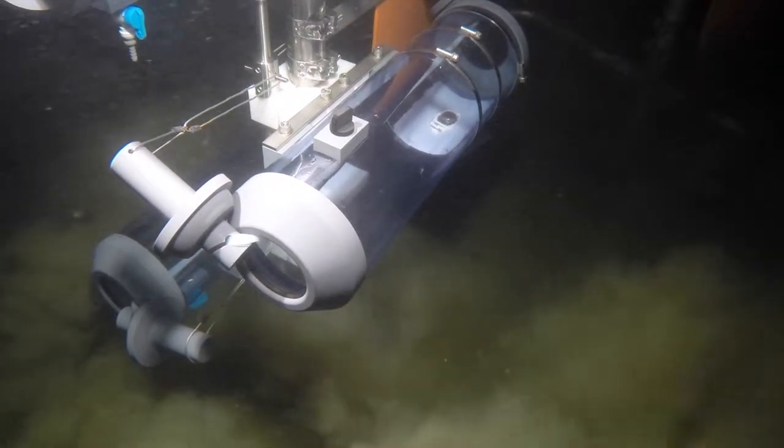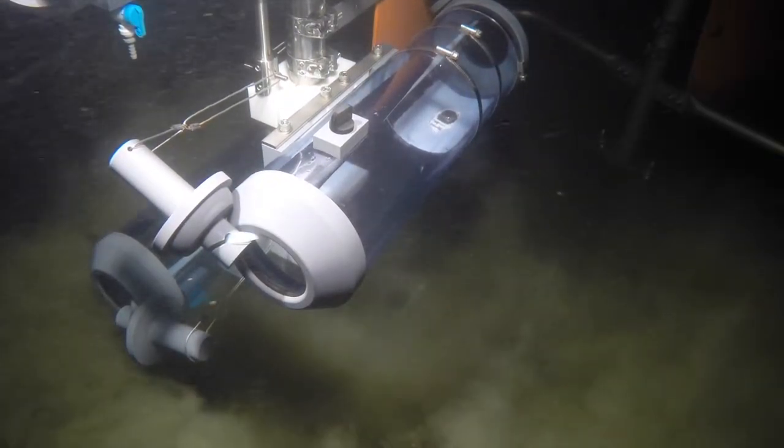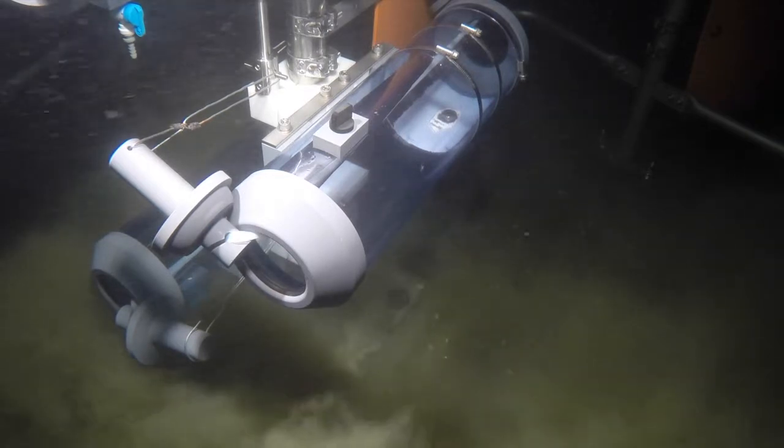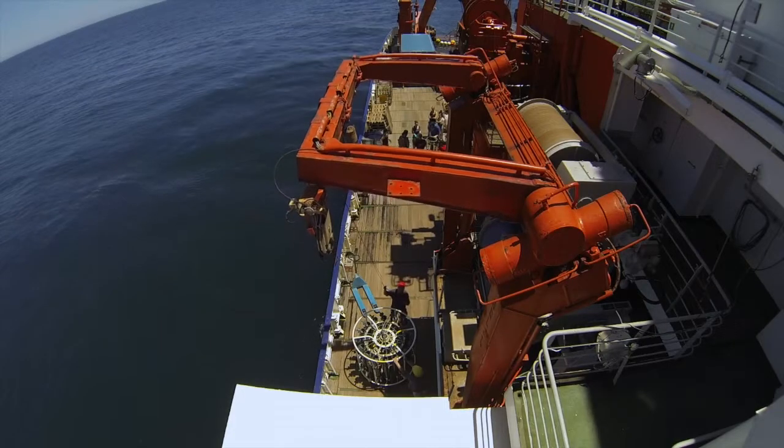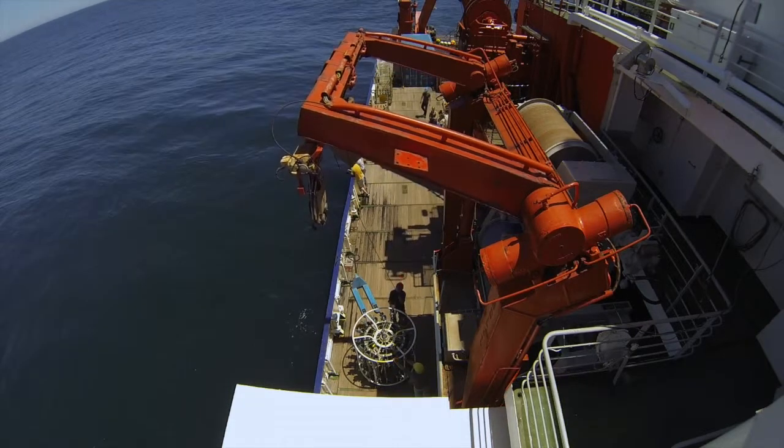The bottom water sampler is used to sample the one and a half meters of the water column above the sediment. In contrast, the CTD rosette is designed to scan and sample the entire water column.